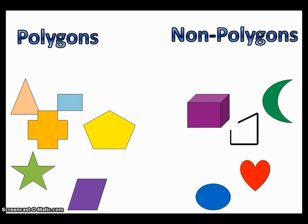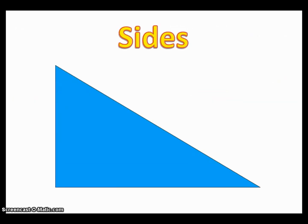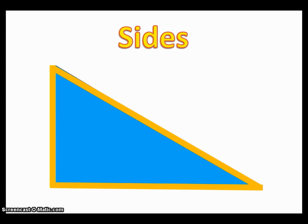So there are two really important features about polygons. One is its sides. So if we take this triangle, for example, there are three different sides there. One, two, three.